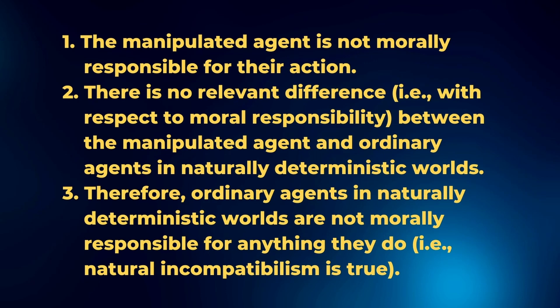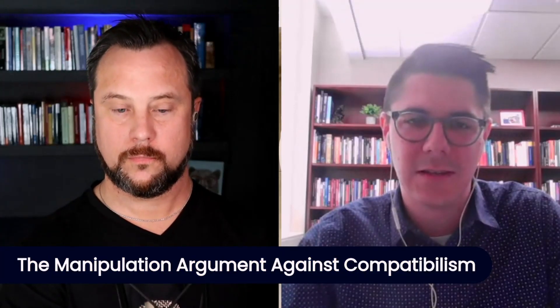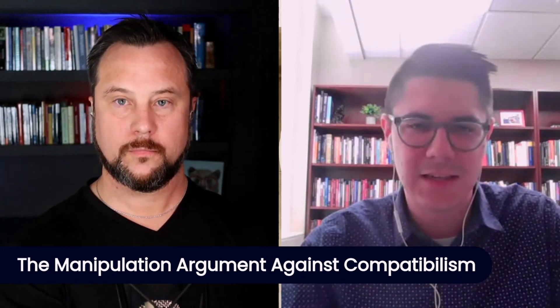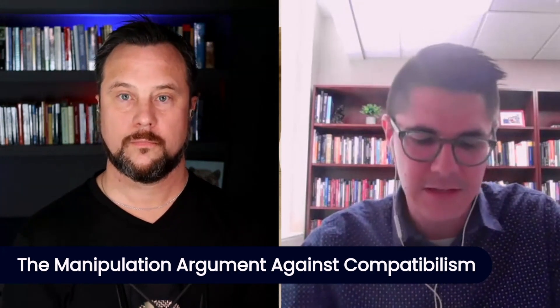And so the conclusion is that ordinary agents in naturally deterministic worlds — that is, worlds with deterministic laws of nature — are not responsible for anything they do, which is to say that compatibilism is false, or that incompatibilism is true. There are a couple of different main types of manipulation cases that get used in this argument.